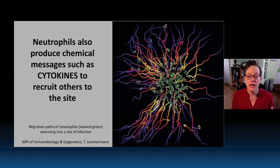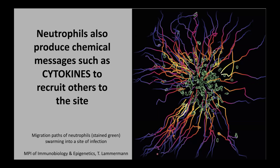That all sounds wonderful, and further wonderfulness is brought into play when we consider that neutrophils also produce chemical messages once they've deployed to the site of an infection, such as cytokines, that help recruit others to the site. This image shows migration paths of neutrophils — so-called swarming — into a site of infection. The neutrophils are stained green, and all of these multicolored paths show how they each progressed to join the first neutrophil on the scene and gobble up microbes, since multiple neutrophils may be required when there are a lot of microbes to devour.